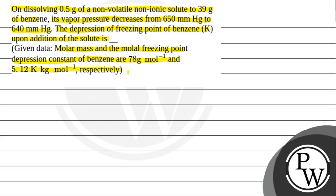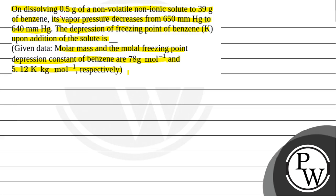We have pure solvent benzene. We add 0.5 grams of non-volatile and non-ionic solute to it. The vapor pressure of pure benzene was 650 mmHg. On dissolving 0.5 grams of non-volatile solute, the vapor pressure of the resulting benzene solution becomes 640 mmHg. We need to find the depression of freezing point of benzene.